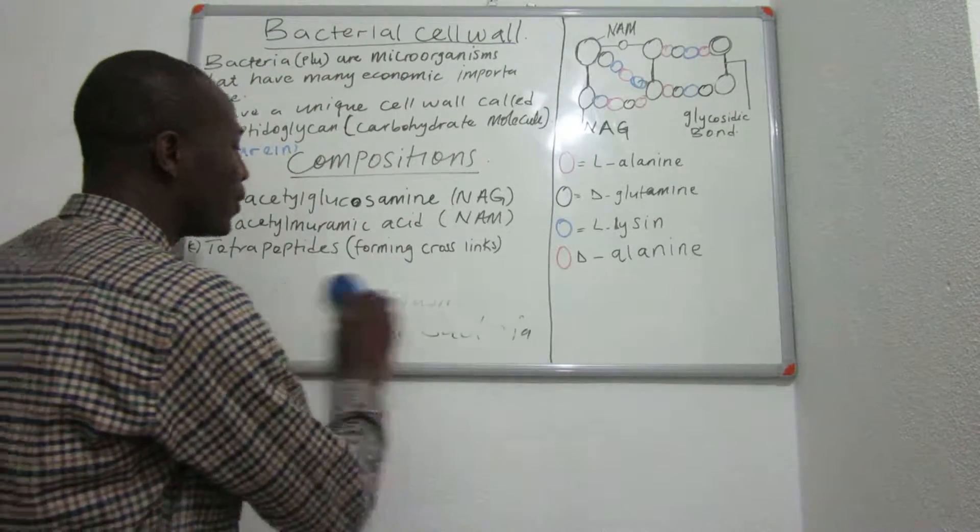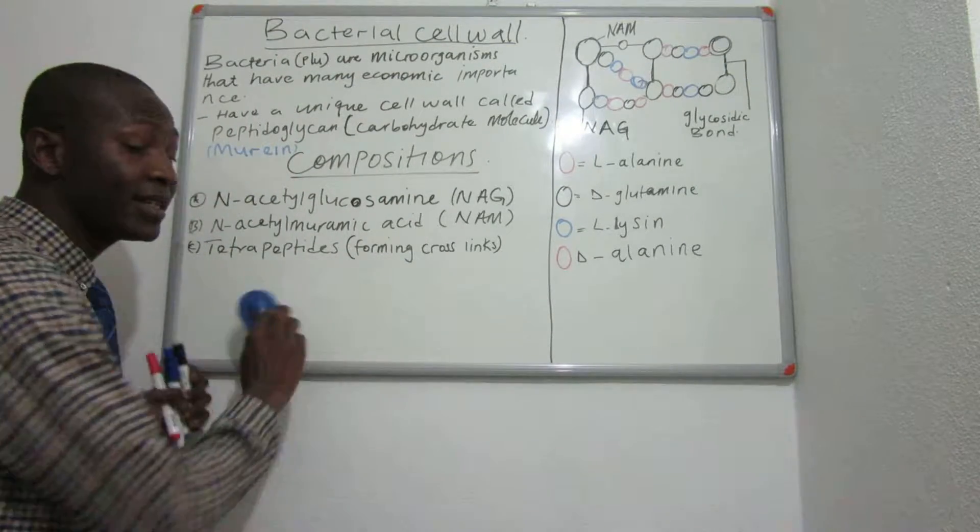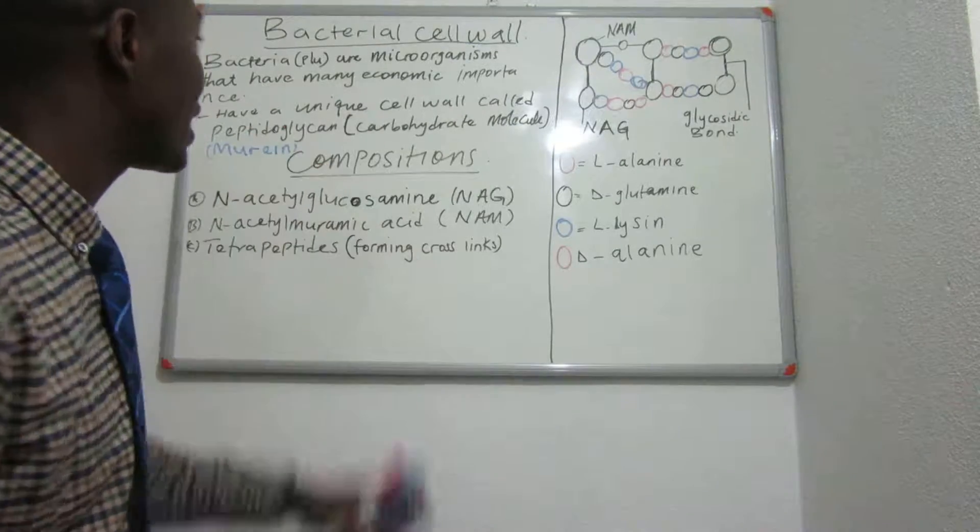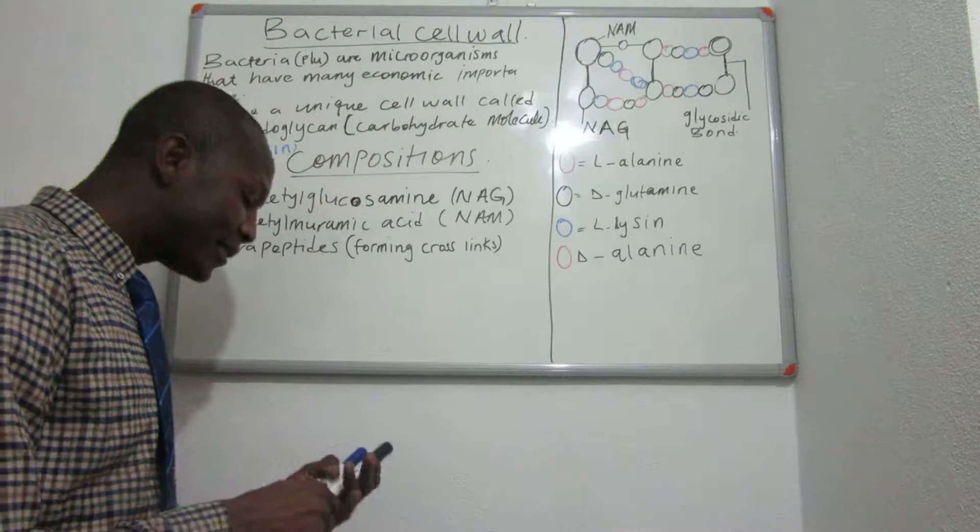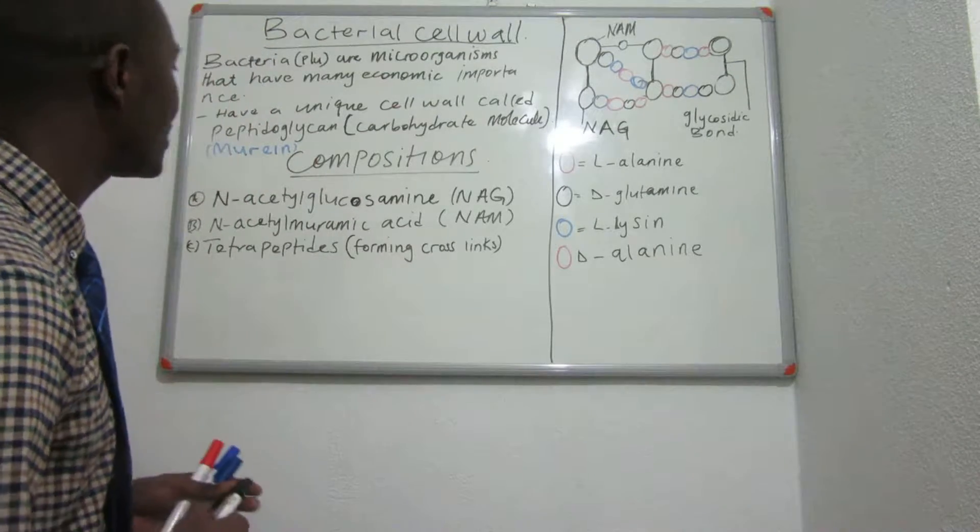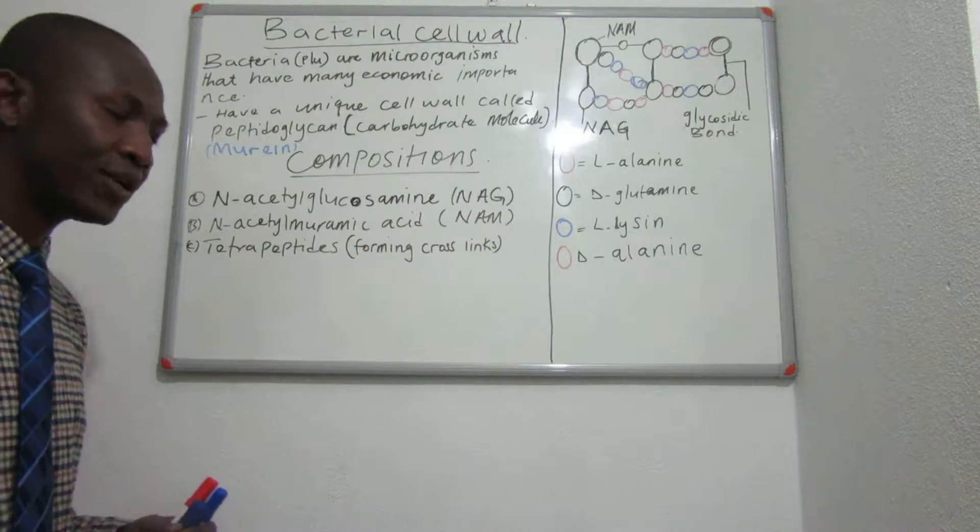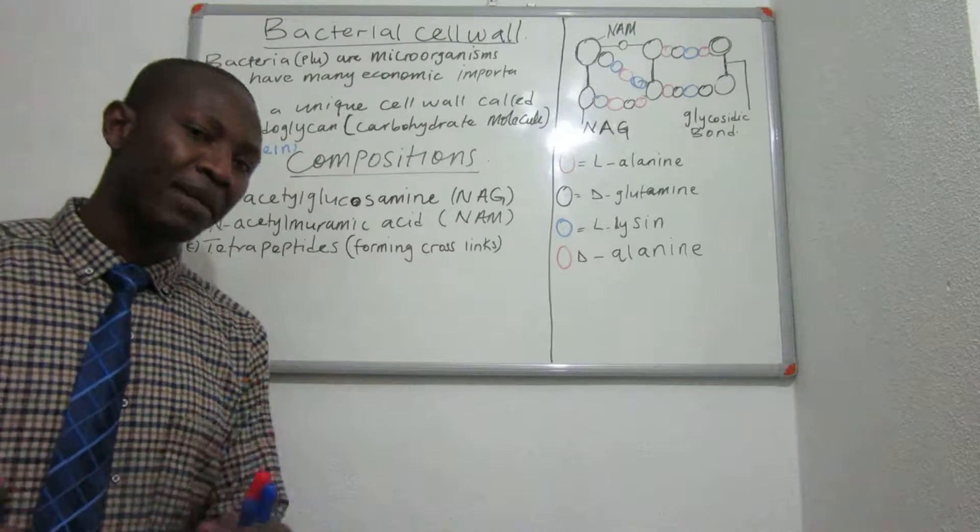When we look at the cell wall structure, as it is called in bacteria, the peptidoglycan or the murine, the composition is like this. Their cell wall consists of two main sugar molecules plus one tetrapeptide.